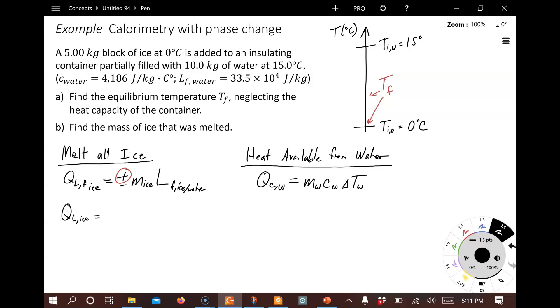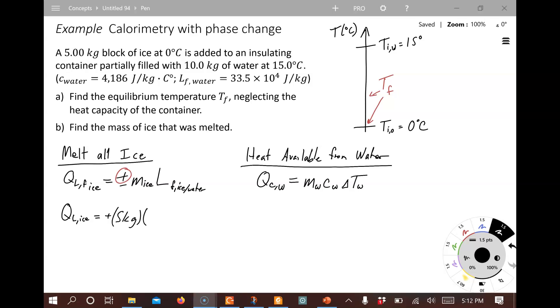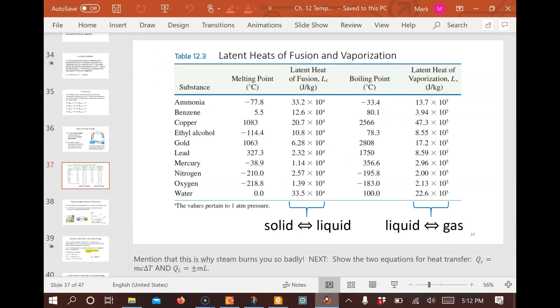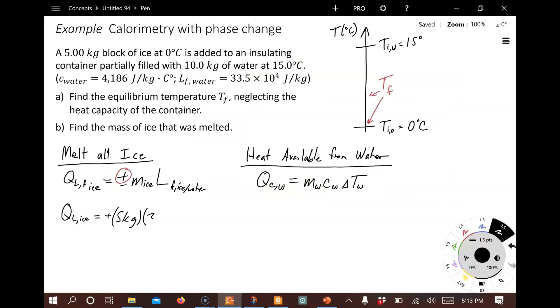How much heat is it going to take here? So we got five kilograms of ice. And now we need to look up the value for L sub f, the latent heat of fusion for ice water phase transition. Latent heat of fusion, LF, here it is. Water, 33.5 times 10 to the fourth joules per kilogram. Kilograms cancel out. And when we plug this into the calculator, we see that the total heat to melt all the ice is equal to 1,675,000 joules. Of course, that's positive.